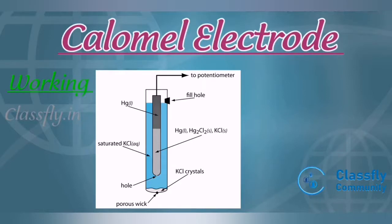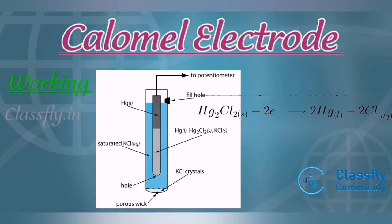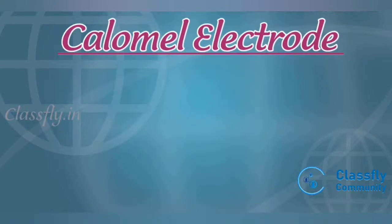If the calomel electrode acts as a cathode, then mercurous chloride (calomel), that is Hg₂Cl₂, accepts electrons and undergoes reduction: Hg₂Cl₂ + 2e⁻ → 2Hg + 2Cl⁻. As with all electrodes, the calomel electrode has an electrode potential.